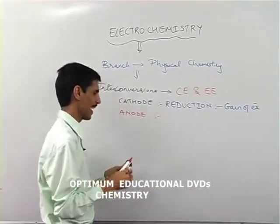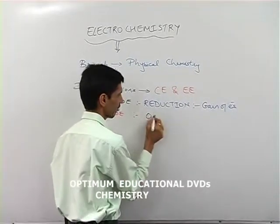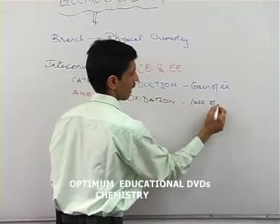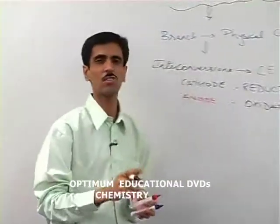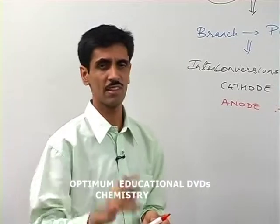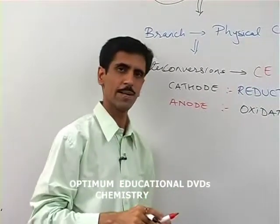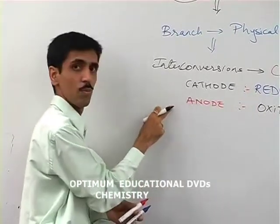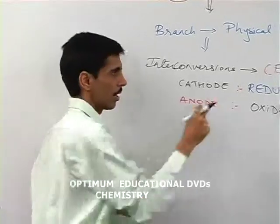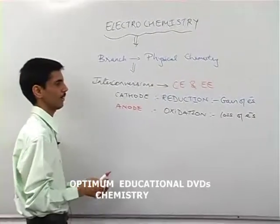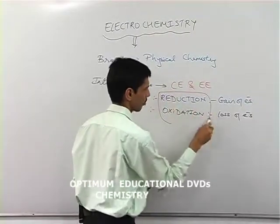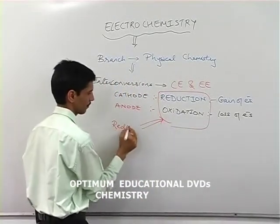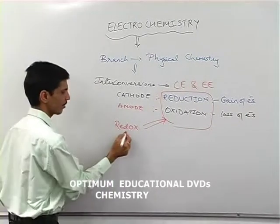Similarly, at the anode, oxidation always takes place. Oxidation is the loss of electrons — electrons are lost, and that is called oxidation. So these are the important definitions to keep in mind. In electrochemistry, we have both cathode and anode, meaning reduction and oxidation reactions both take place together, giving us what is called a redox reaction.